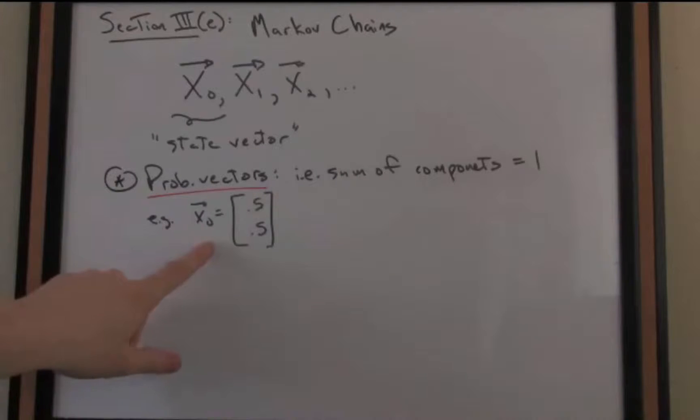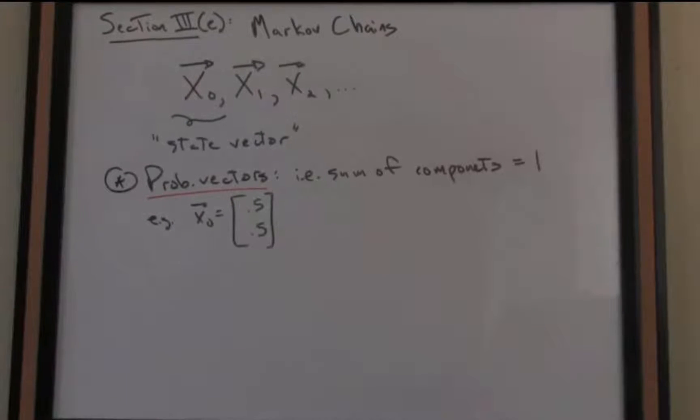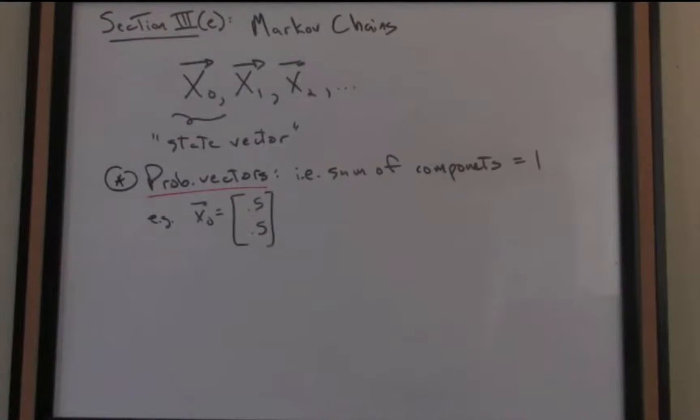the vector, let's say, x0.5.5 in R2. Of course, the sum of those components is 1, so that would be called a probability vector. And the reason we're bringing probability vectors into the fold here is because we're going to describe this dynamical change over time through a probabilistic mechanism.